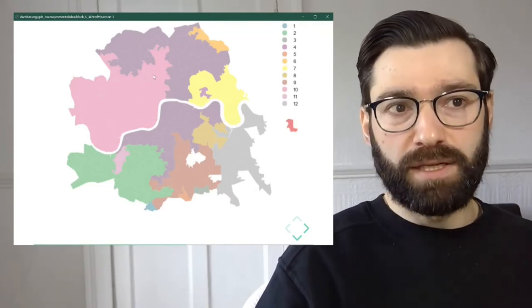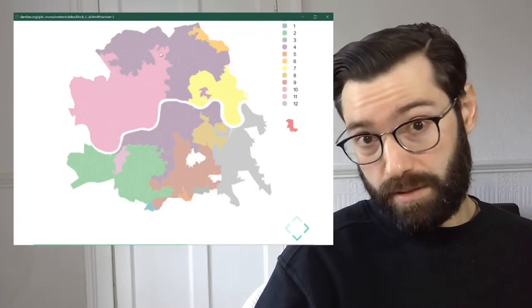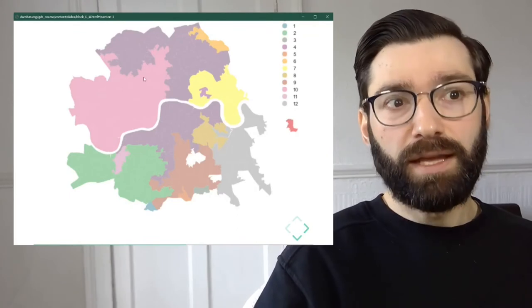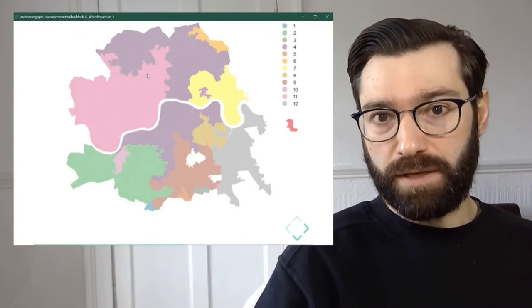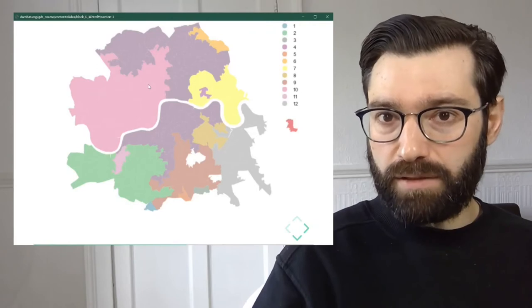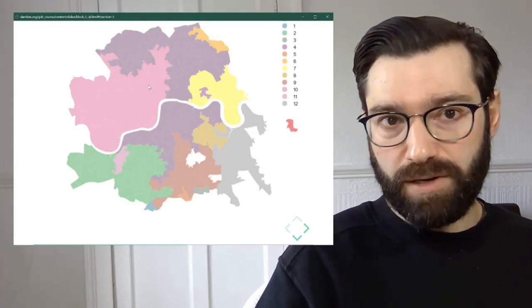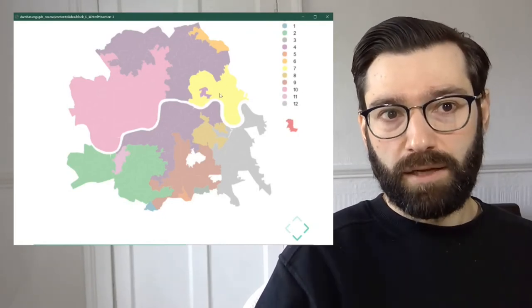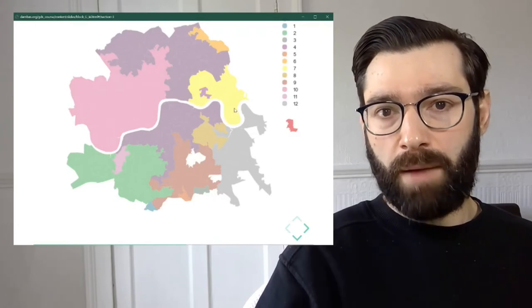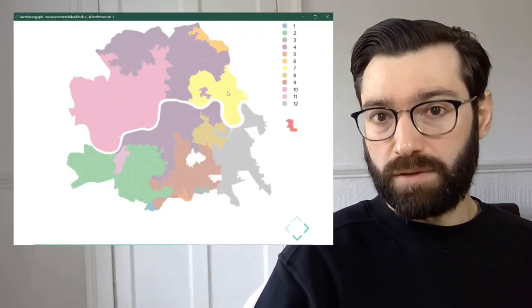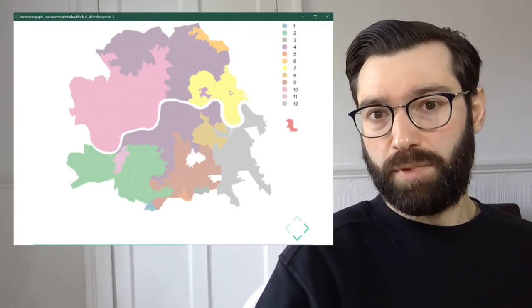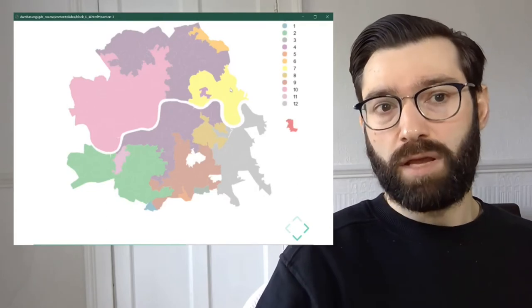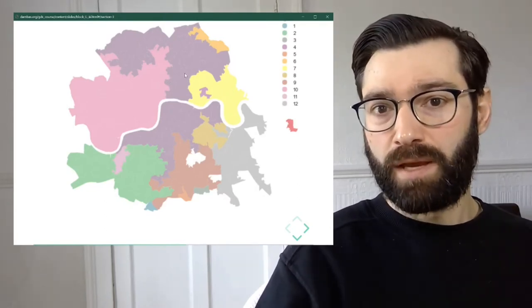So what the algorithm has done is grow these larger areas or these regions in a way that every area within the region is contiguous. Think for a second, if this was a non-regionalization clustering algorithm, there is no reason why all of the yellow areas would be in the same part of the map and would all of them be connected by a contiguity relationship.